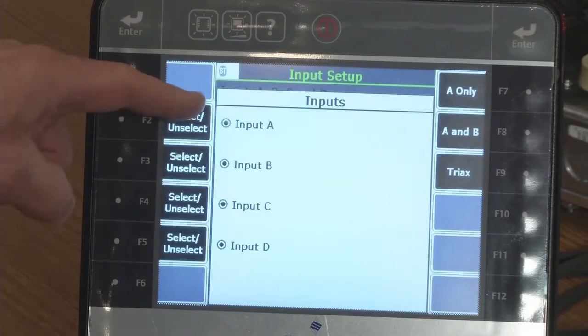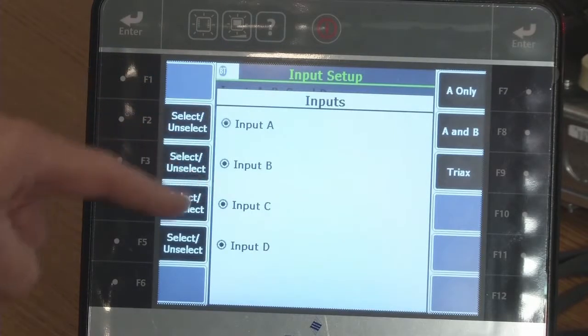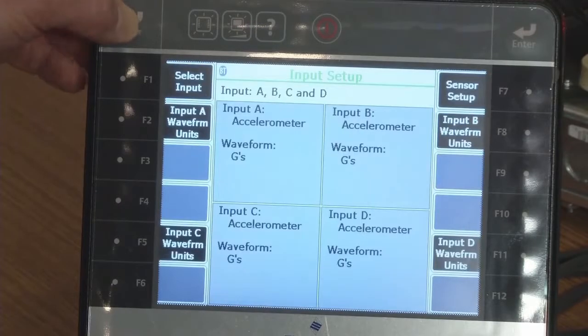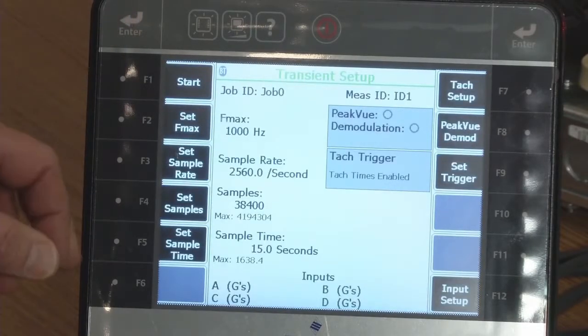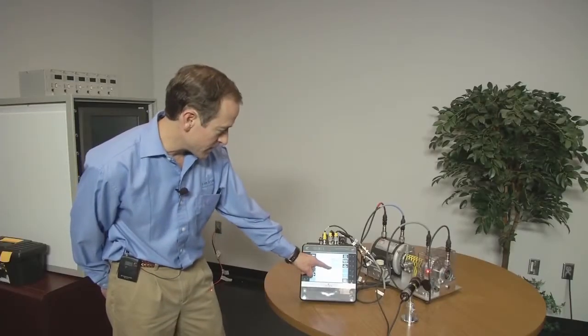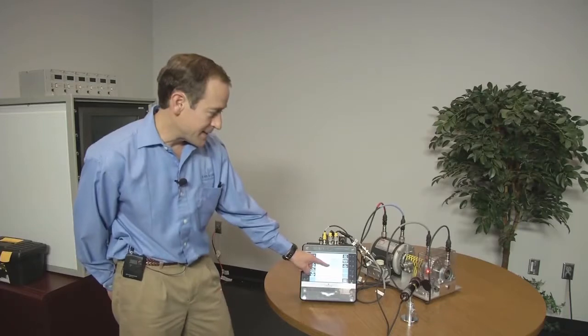From the input setup, I see that I've got all four accelerometers selected. I see that I'm going to take 15 seconds of data, and I'm going to have an FMax of 1000 Hz. I also have my trigger. My trigger is a TAC trigger.